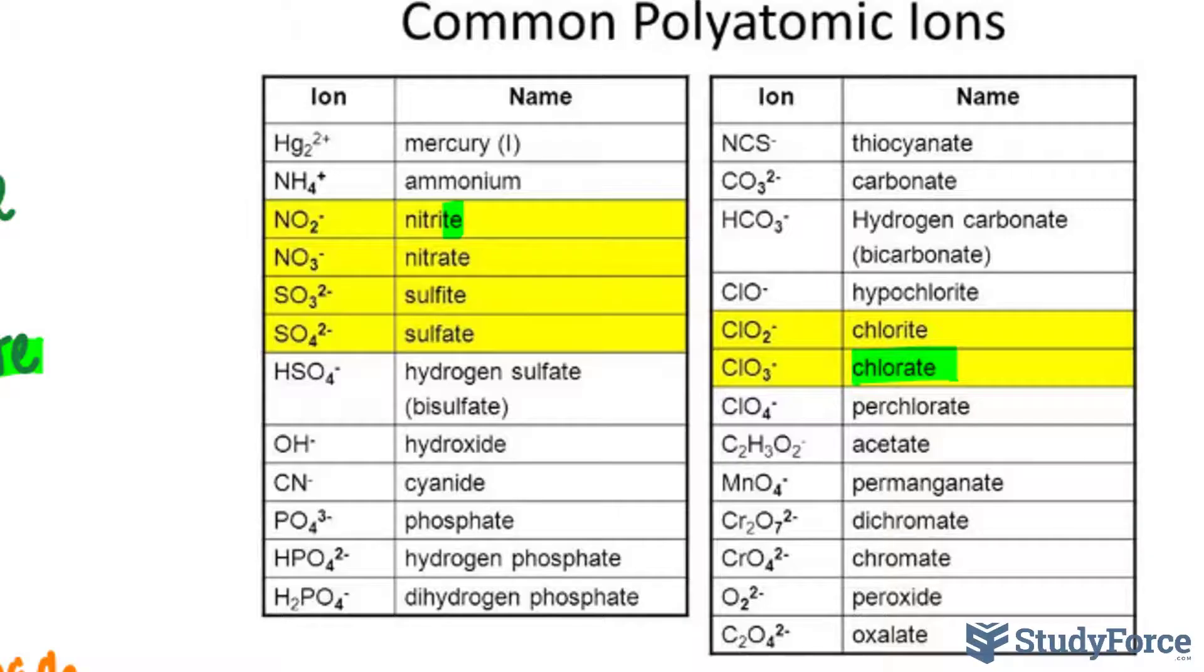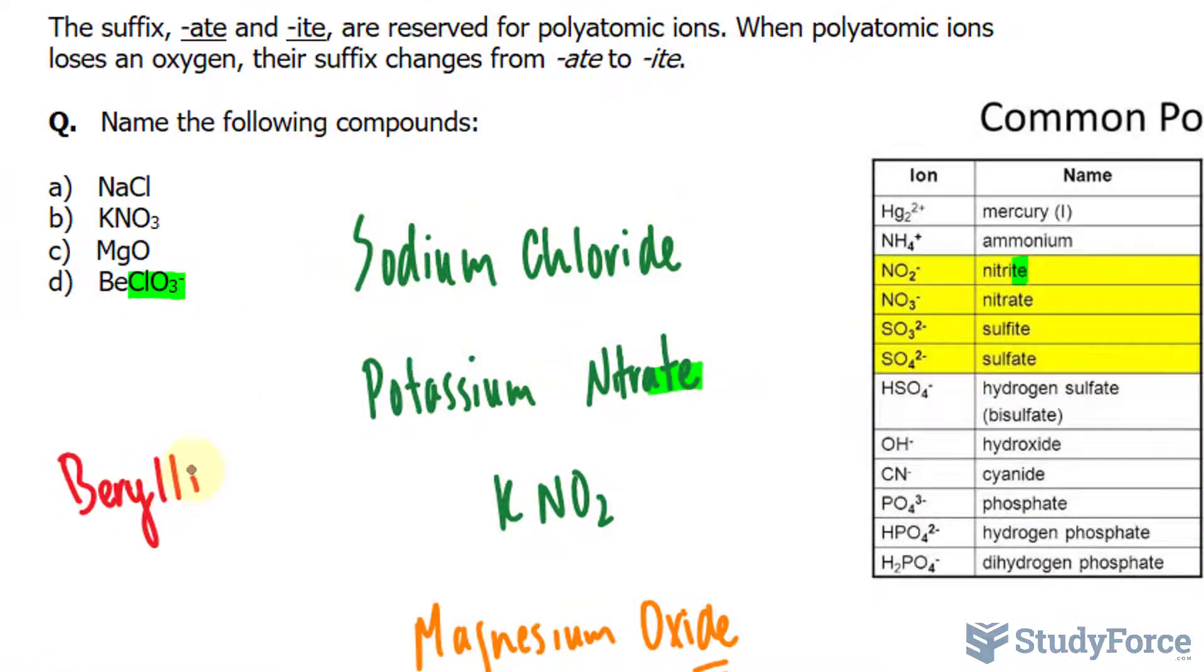We would name this beryllium chlorate. Had this been ClO subscript 2, we would call it beryllium chlorite.